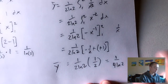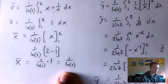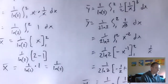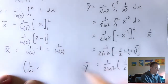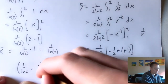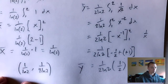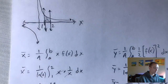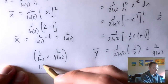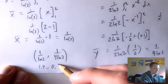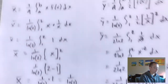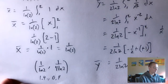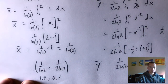So the x-coordinate of our centroid is 1 over ln(2), and the y-coordinate is 1 over (4 ln 2). The exact coordinates of our centroid are (1/ln 2, 1/(4 ln 2)). We can plug these into a calculator to confirm the point lies in the region — we'd find approximately x = 1.4 and y = 0.4, which is definitely within this region. So that's a reasonable answer and makes sense.